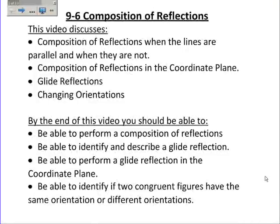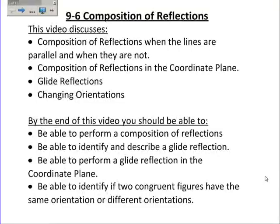9-6 is about the composition of reflections. A composition is where you do more than one transformation, so a composition of reflections is where you do more than one reflection. Specifically, we'll look at two reflections. We will look at when the lines are parallel and when they're not, and what happens in each case. We'll look at compositions of reflections in the coordinate plane, glide reflections, and also when an object changes orientation.